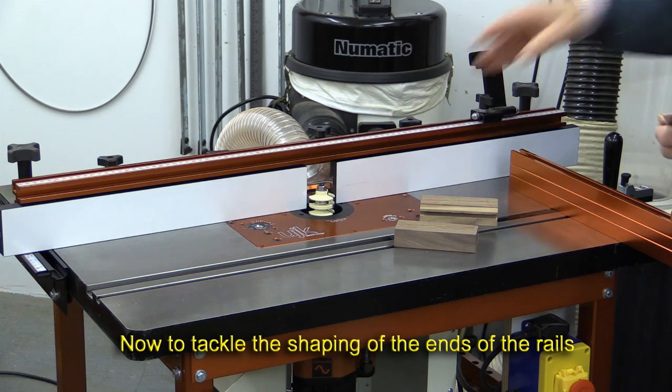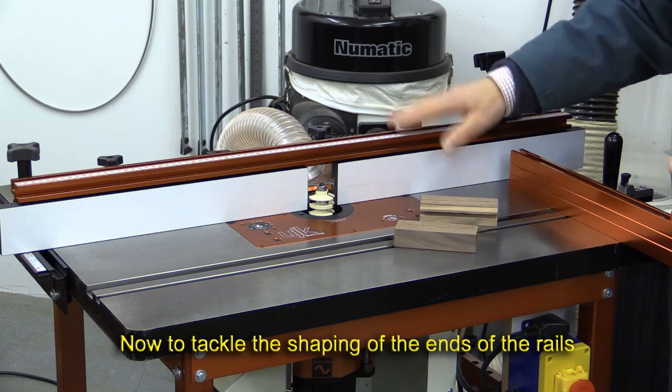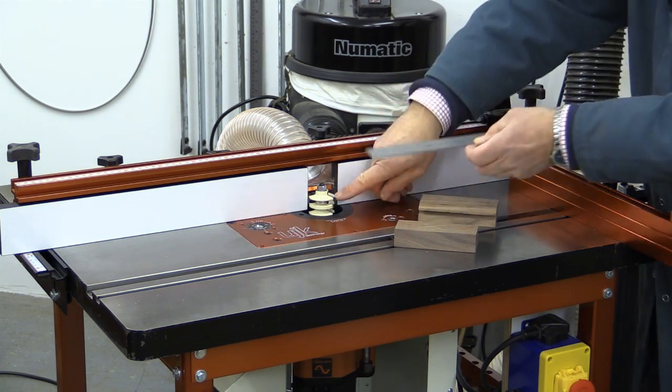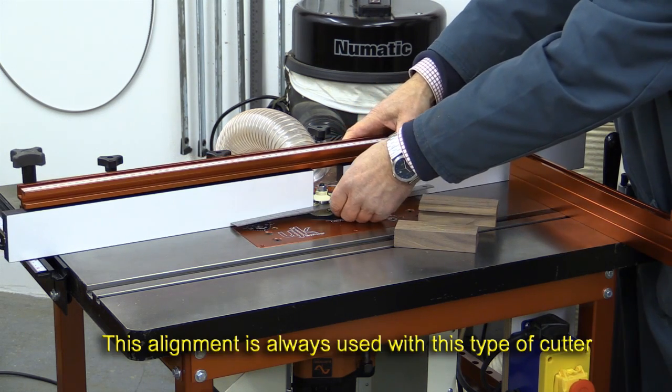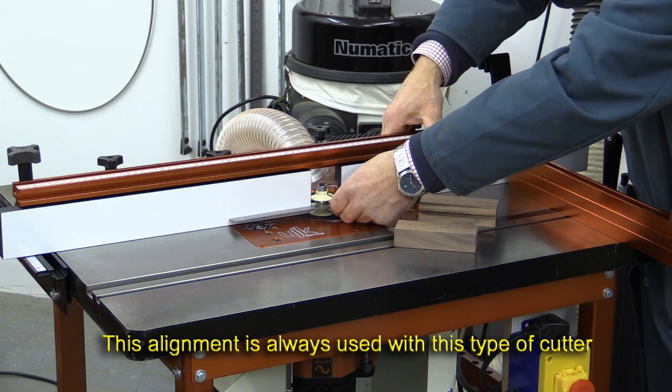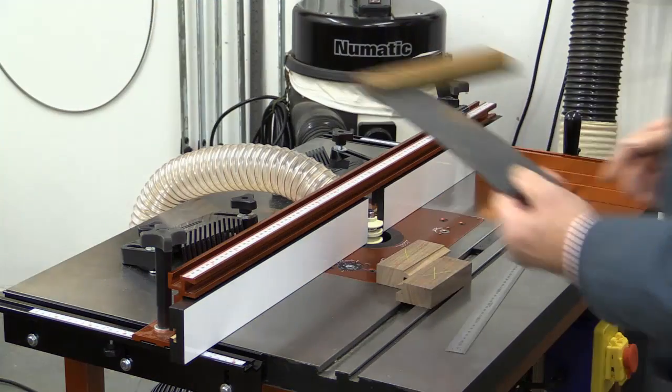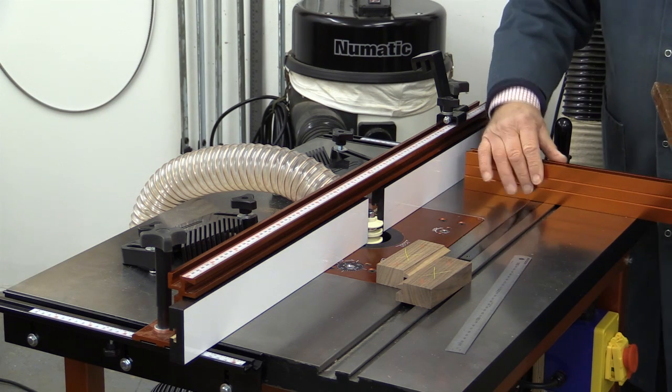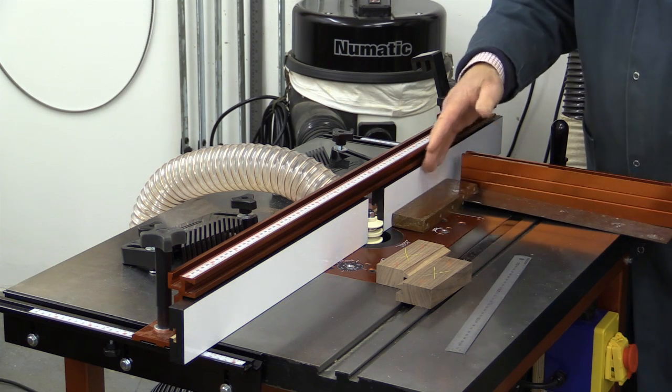Now there are two things we're trying to achieve when we set this rear fence. The first thing is that it has to be set such that the ball bearing, which is between the top cutter and the middle cutter, has to be in line with the face here of the fence. And so I'm going to do that first.